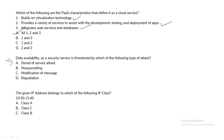Data availability as a security service is threatened by which type of attack? A Denial of Service attack is the correct answer. Also, the IP address 10.50.13.40 belongs to which IP class? This belongs to Class A.